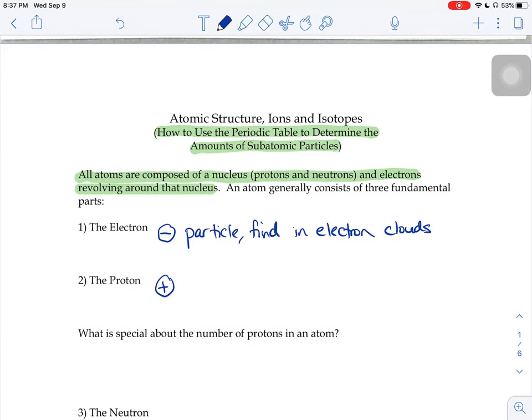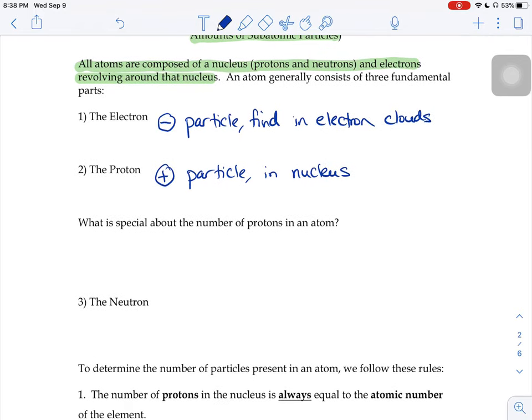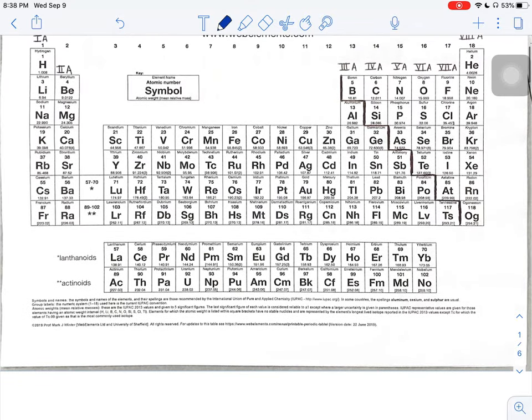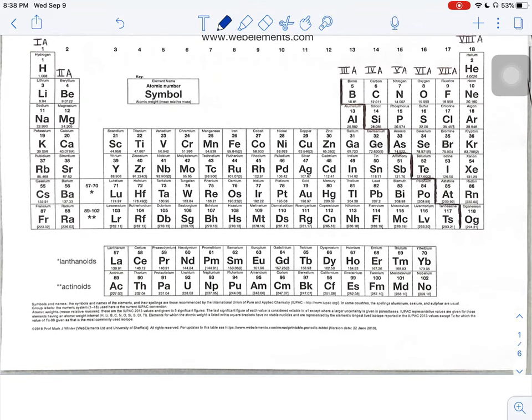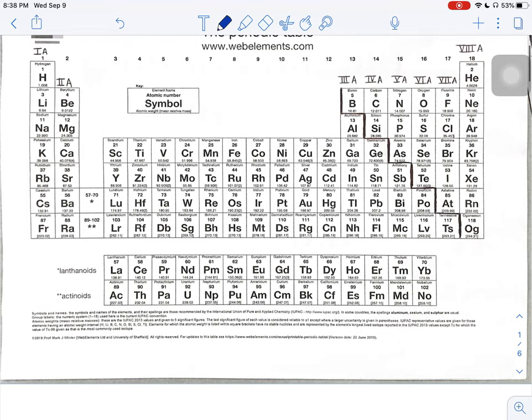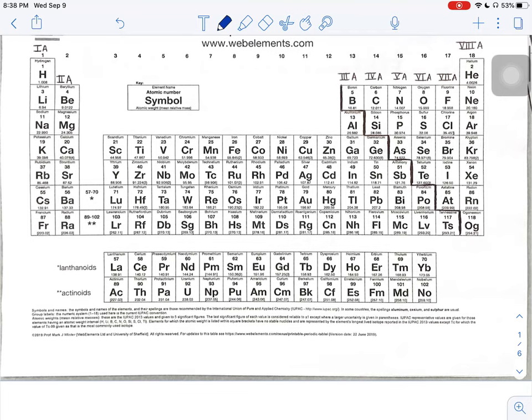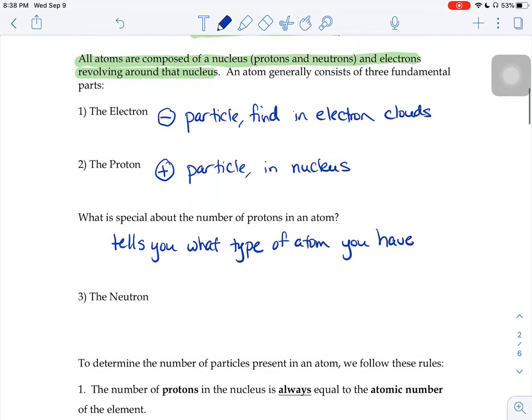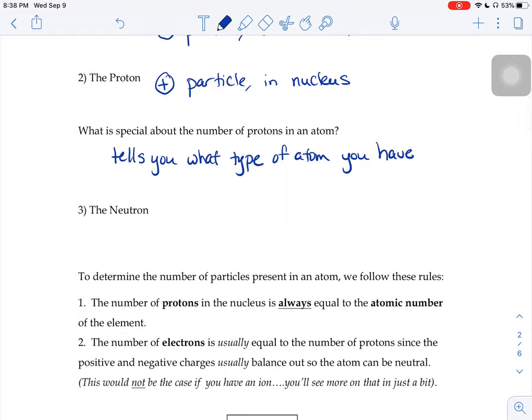Then we have a proton, which is your positively charged particle, and that guy is found in the nucleus in the center. The proton number is unique and special because it tells you what type of atom you're talking about in that particular problem. If you have an atom of hydrogen, for example, all atoms of hydrogen always have the same number of protons. That's how you can tell that it's an atom of hydrogen, or all helium atoms have the same number of protons. All oxygen atoms have the same number of protons. Just by proton number alone, you can figure out what type of atom you have off the periodic table.